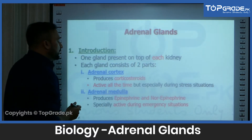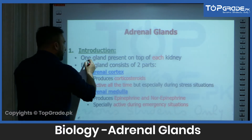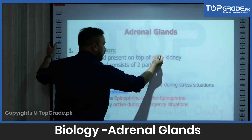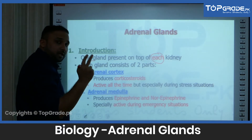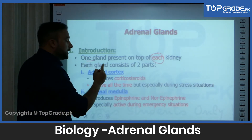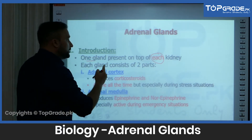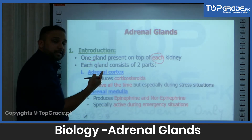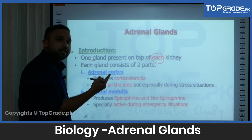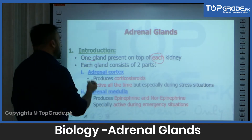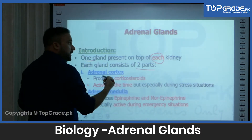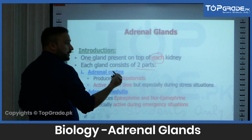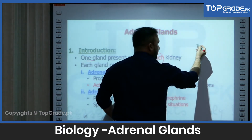First of all, I would like to introduce you to the adrenal glands. One gland is actually present on the top of each kidney. In our body there are two kidneys, and on top of each kidney an adrenal — or supra-renal — gland is present. The supra-renal gland and adrenal gland are one and the same thing, and each gland consists of two parts.